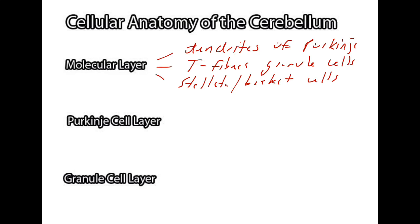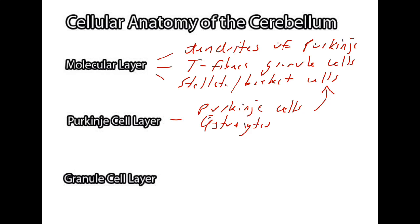The next deepest layer is known as the Purkinje cell layer, and as you might guess, the actual cell bodies of the Purkinje cells are located here. They send their dendrites up into the molecular layer. In addition to the Purkinje cells, there are astrocytes that help in the maintenance of the Purkinje cells, known as specialized cells called Bergmann cells.